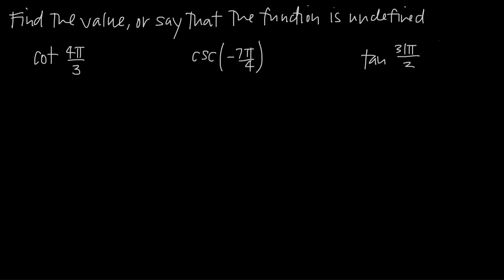In this video, we're talking about how to find the values of trigonometric functions when we're not dealing with sine and cosine functions, but instead functions like cotangent, cosecant, and tangent. We're going to be relying heavily on the unit circle in this problem, so if you have one, go ahead and pull it out.